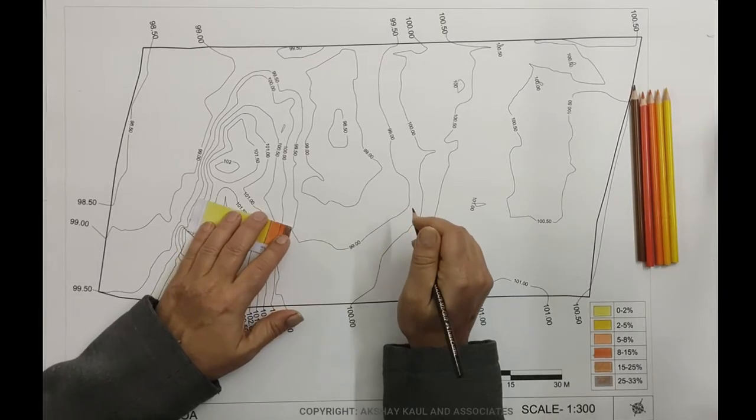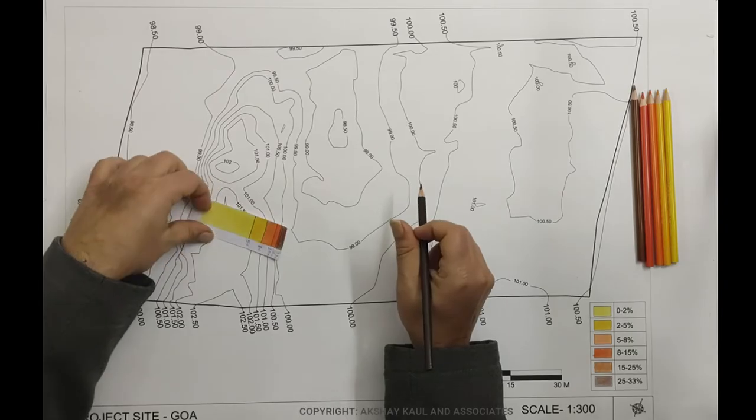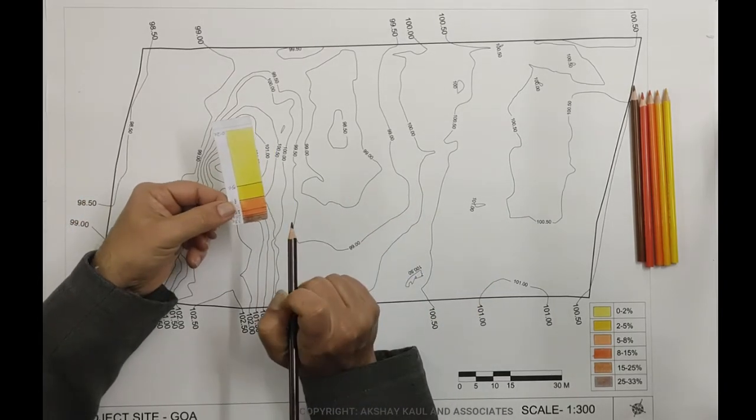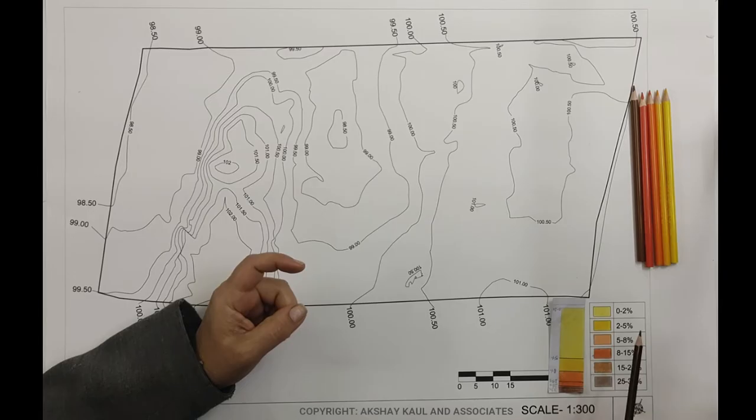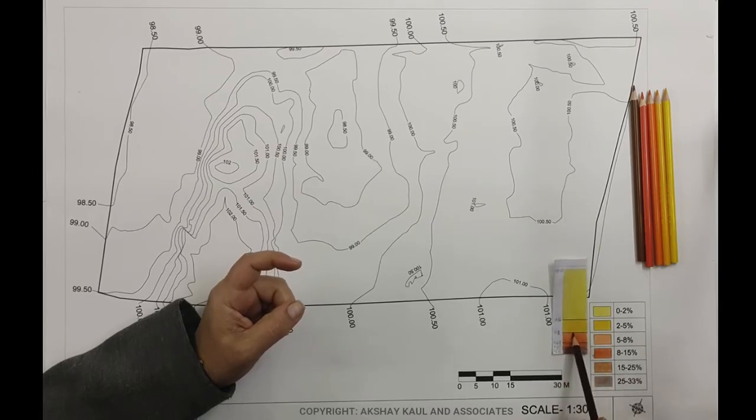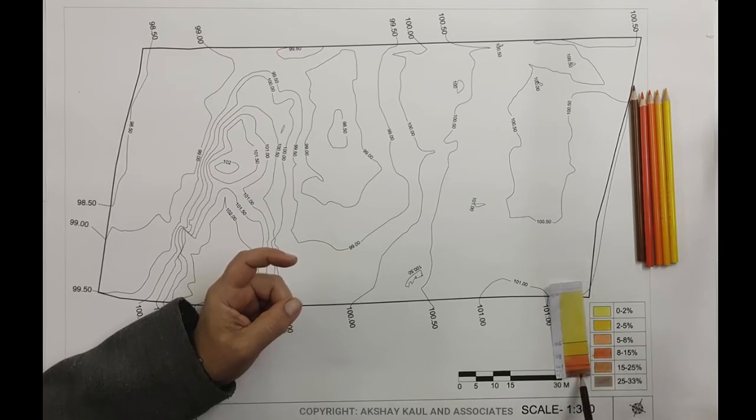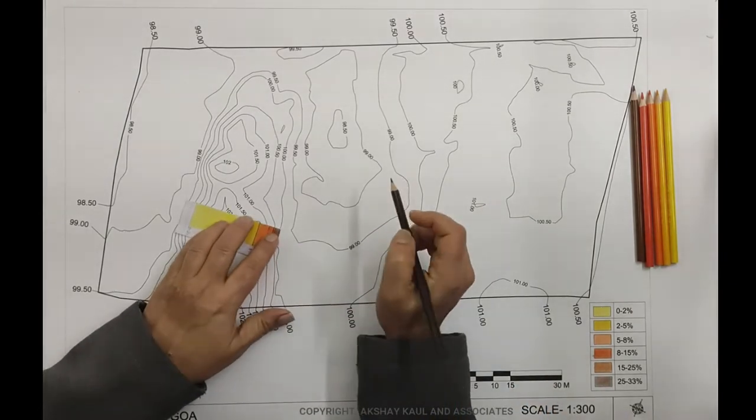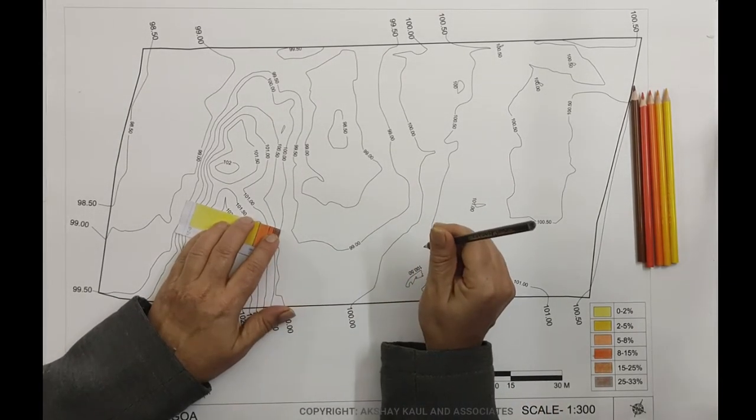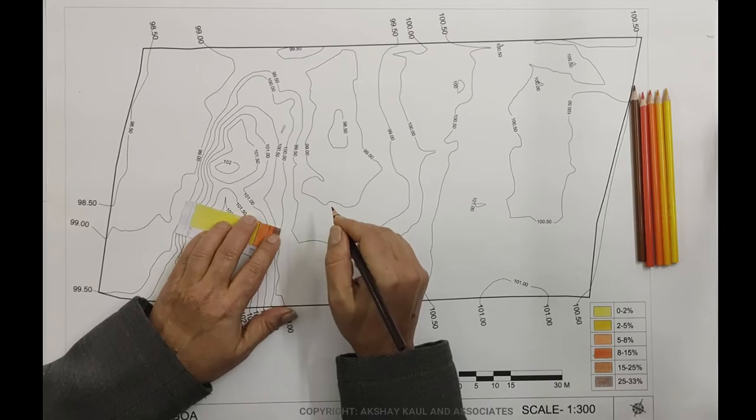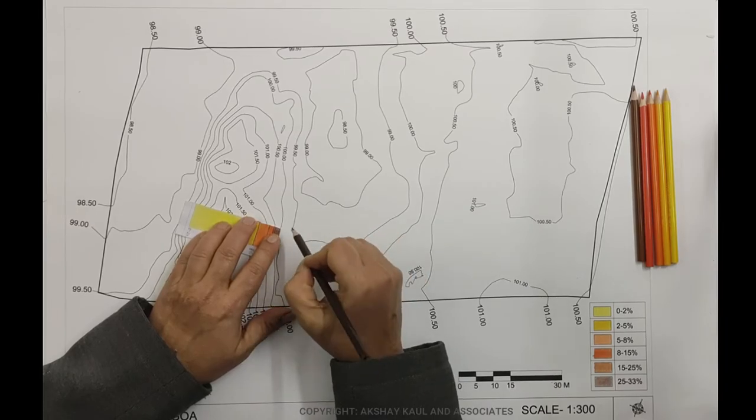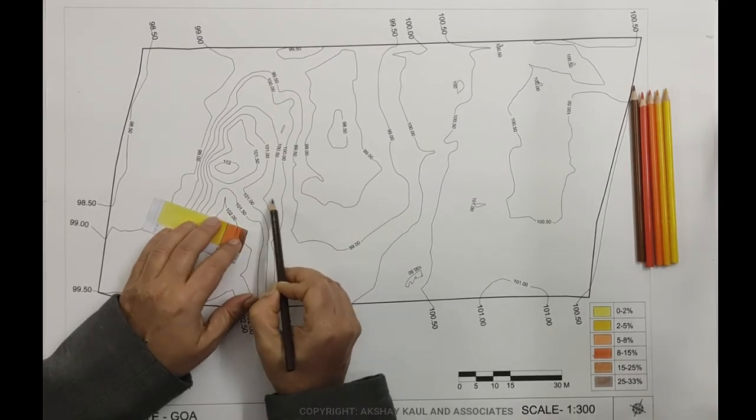So I am demonstrating how to do slope analysis. This is the scale that we have made which corresponds to the scale over here. This is 2 percent slope, 2 to 5 percent, 5 to 8, 8 to 15, 15 to 25, and 25 and more. So we move the scale on the drawing, and as we move the scale we will start to color. The way to move is to move between two contours.